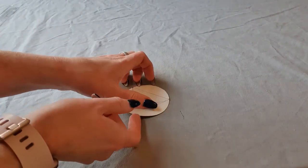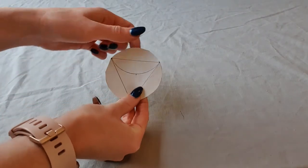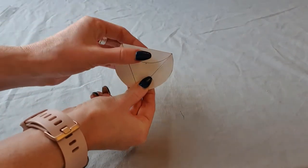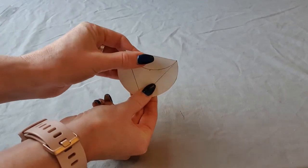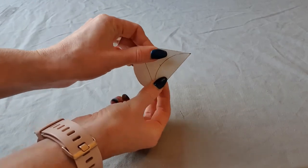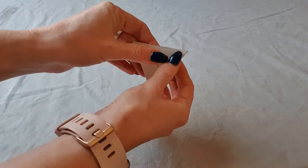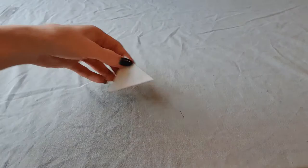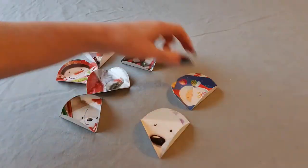Fold along the straight lines of the triangle you drew, folding the flaps towards the front of the card. Repeat on all circles.